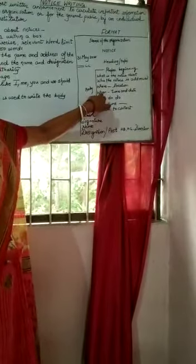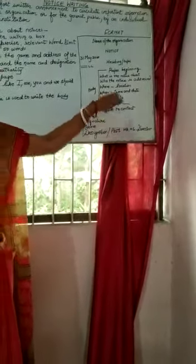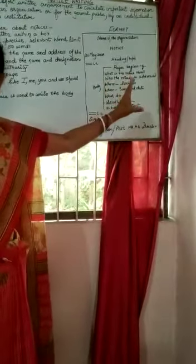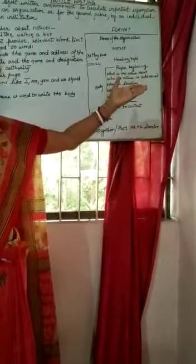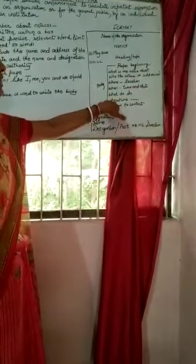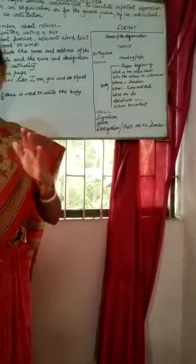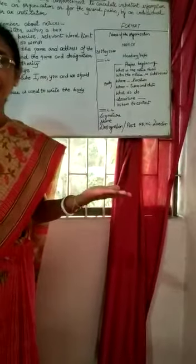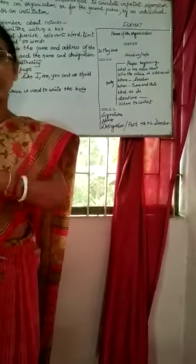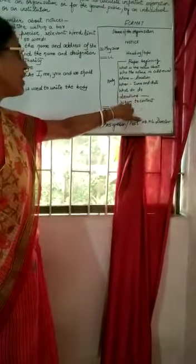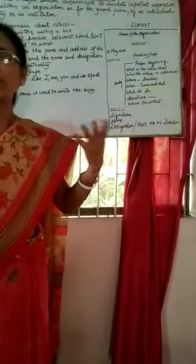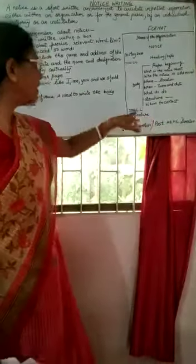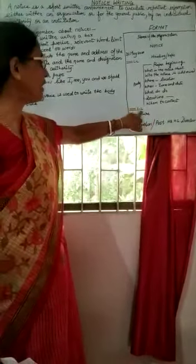Then you write when — the date and the time. After that, you give instructions: what those receiving the notice have to do. Then the deadline — for example, if it is a debate competition, by a certain date you have to submit names. And finally, whom to contact — whoever is circulating the notice, like the head boy. You leave one line and then write the signature.